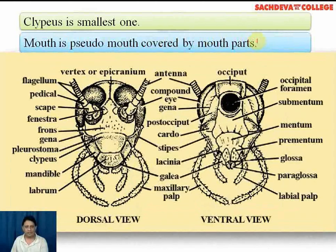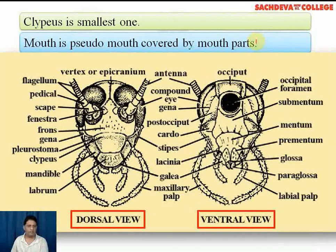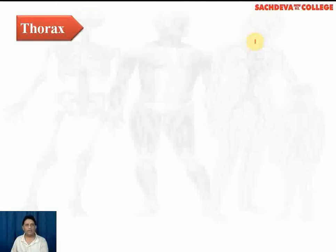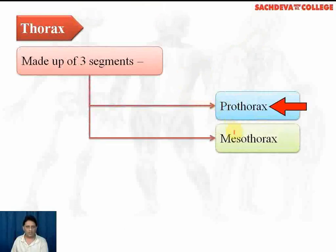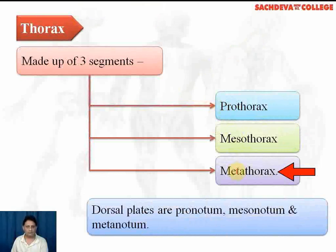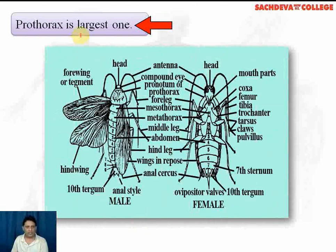The thorax is made up of three segments: the prothorax, mesothorax, and metathorax. The dorsal plates are the pronotum, mesonotum, and metanotum respectively. Prothorax is the largest segment. In male and female cockroaches, one anal style is present in the male and absent in the female — it is the anal style that differentiates the male cockroach from the female.